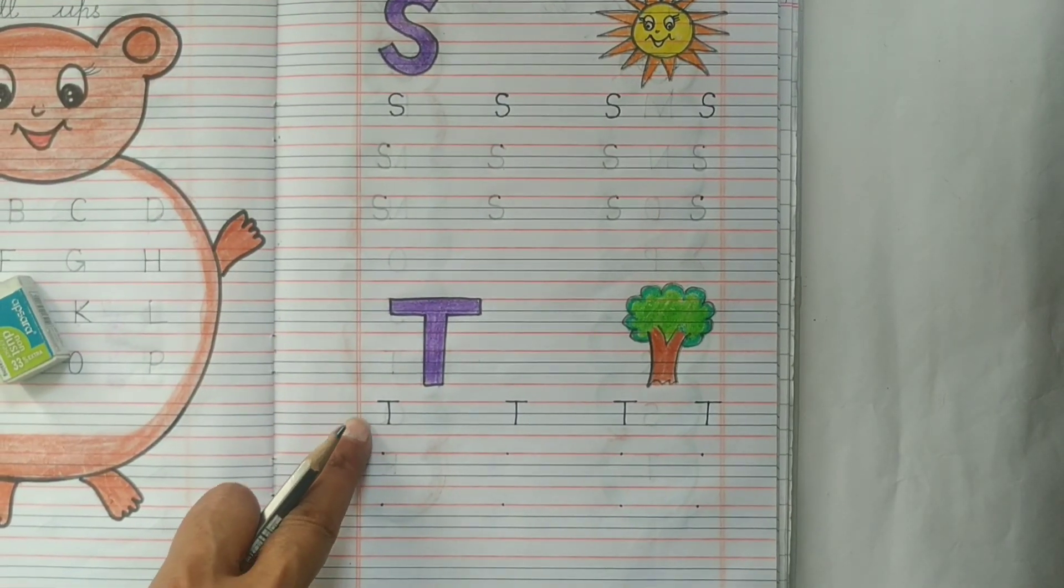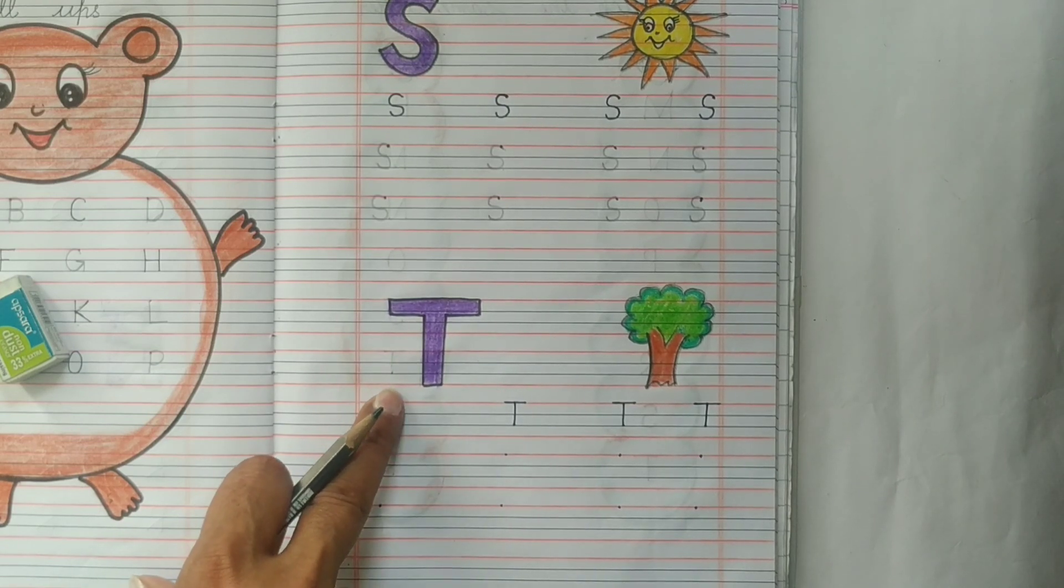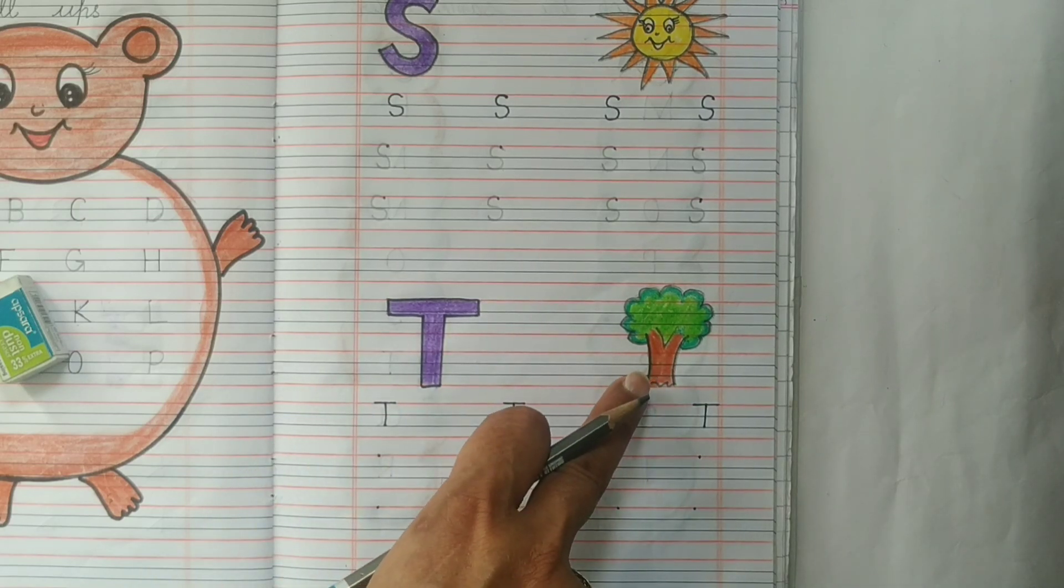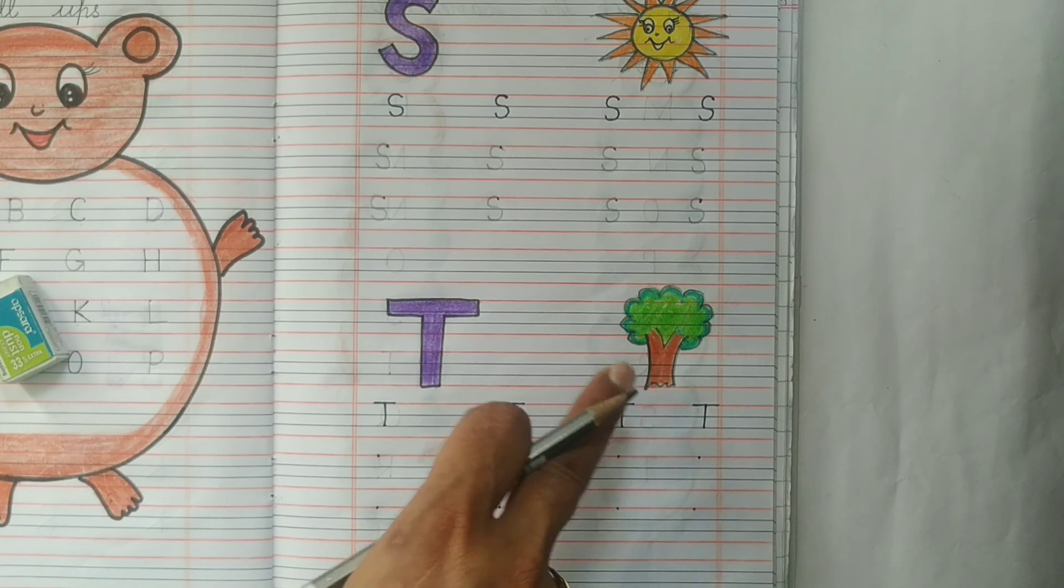Now kids, look here. This is letter T. The sound of letter T is ta. T for tree. T for tree. We should plant more and more trees.